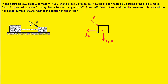Also, since mass 2 is connected to this string, that string is pulling back on m2, and so we're going to have a force pulling back on the block, and we can call that t. Finally, we have the normal force that's pointing straight up, which we can call fn.